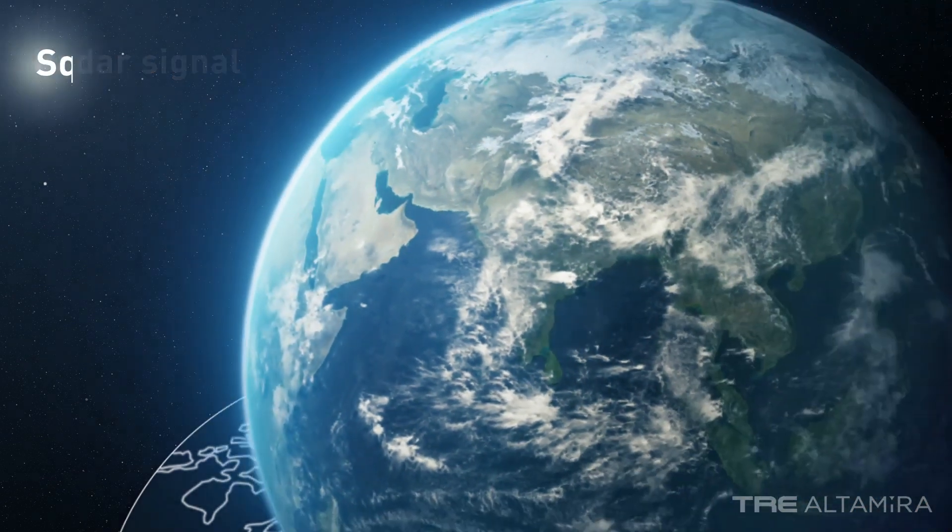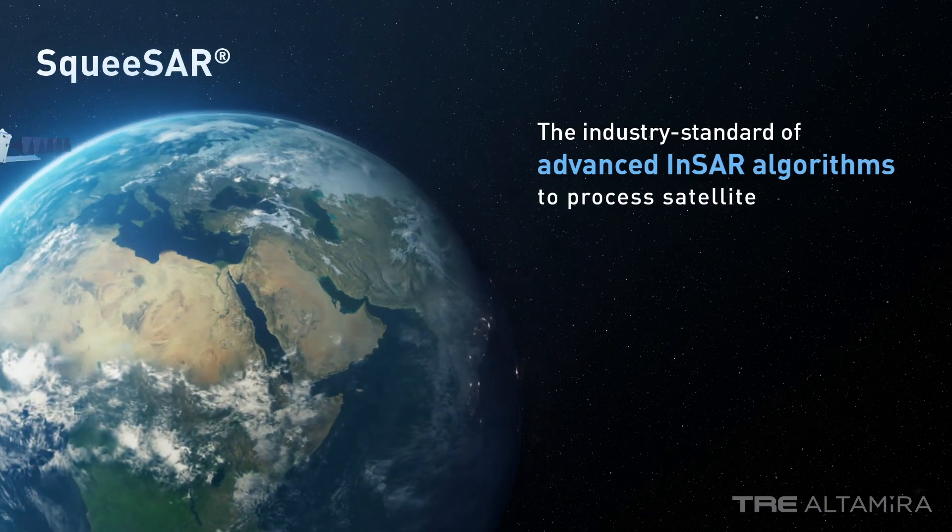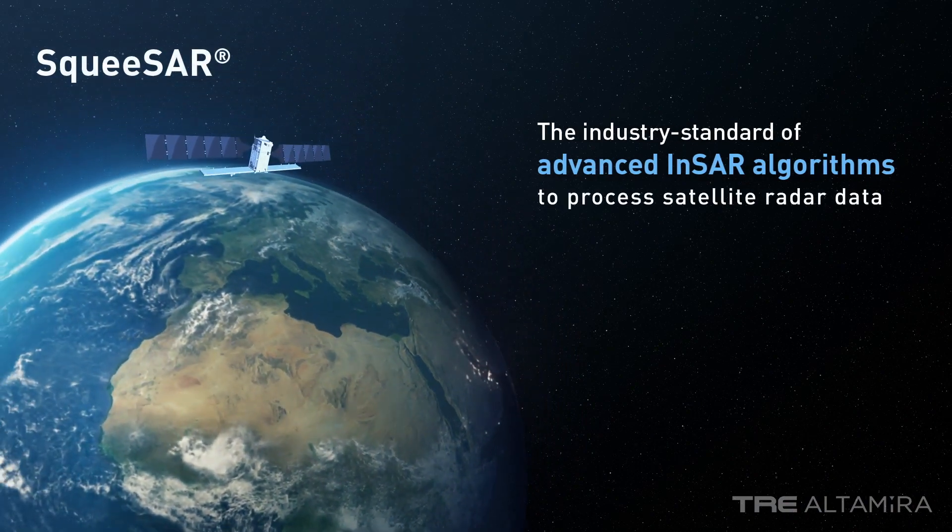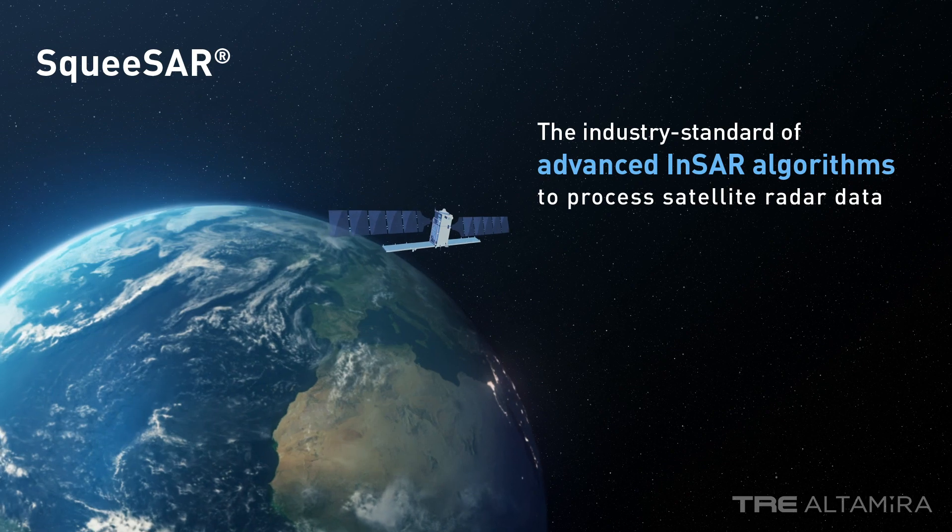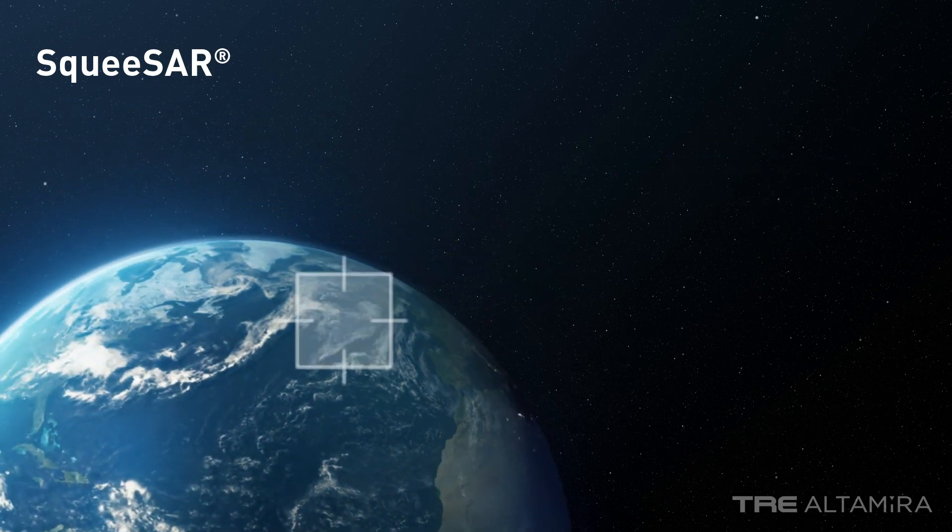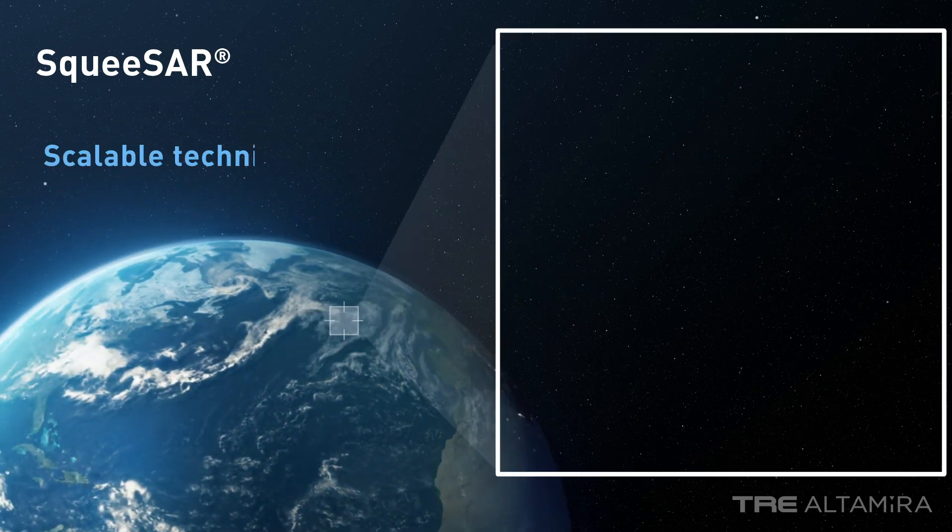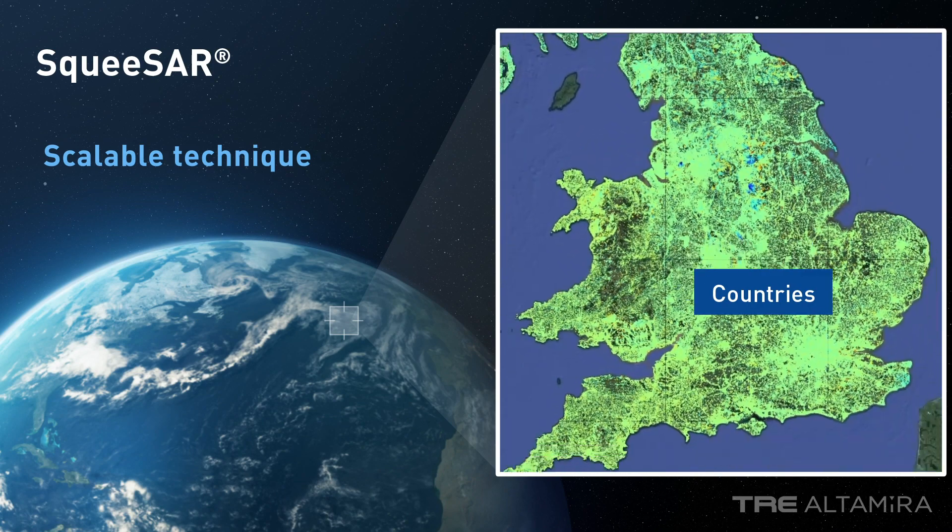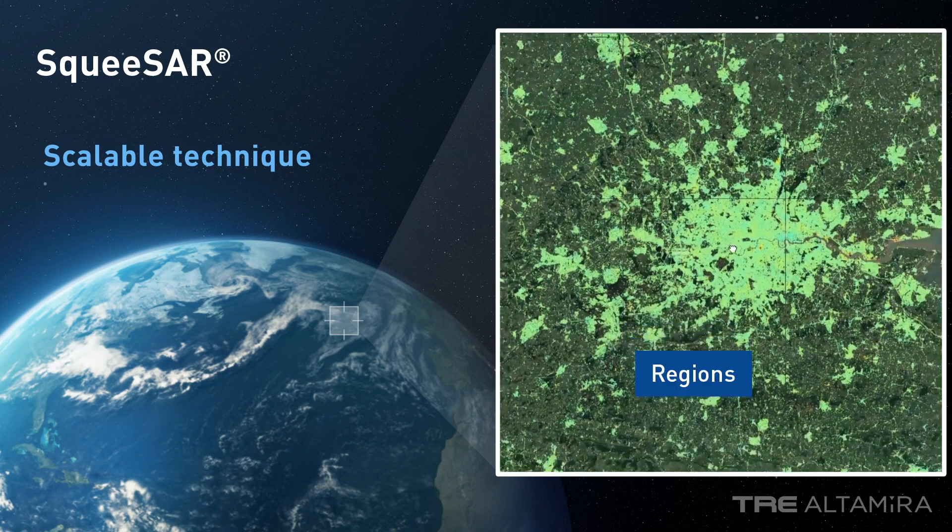We use SQUISAR, our advanced processing algorithm, to extract a dense array of displacement measurements from multiple radar images acquired over time. SQUISAR is scalable and can be used to analyze entire countries, regions, or single assets.